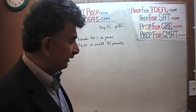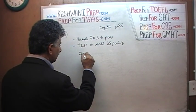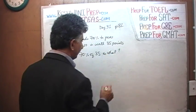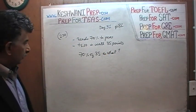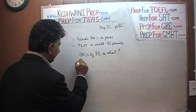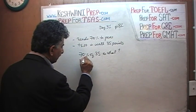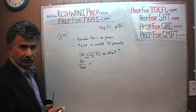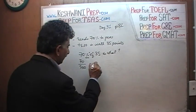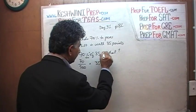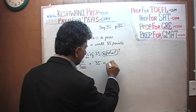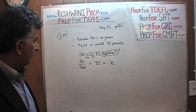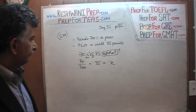Essentially, what they're asking here is: 70% of 35 is what? That's what they're asking. Well, let's find out. 70% means over 100. 'Of' we know means times. And then 35. 'Is' means equals. And what is our unknown quantity, which we traditionally represent with the letter X? That's it — we're done. 70% of 35 is what?